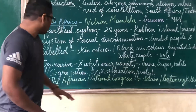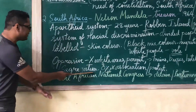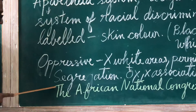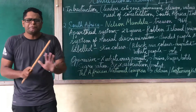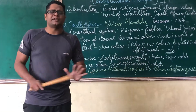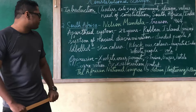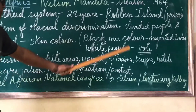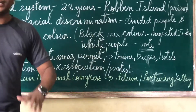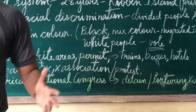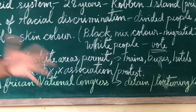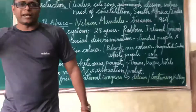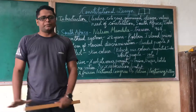Everything was called segregation — everything was separated. What things were separated? Trains, buses, stadiums, gardens — all these things were separated for white people and black people. Everything in the country was separated.